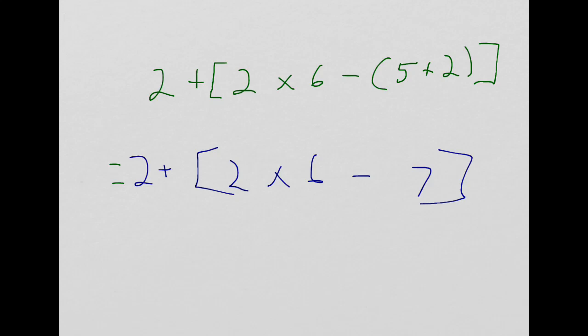And we have 2 times 6 minus 7, all in parentheses. And then we add that to 2. And then that's 2 plus, we do the multiplication before the subtraction, so that's 12 minus 7. And that's equal to 2 plus 5, which equals 7. Pretty straightforward stuff.